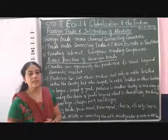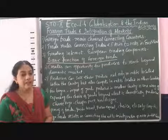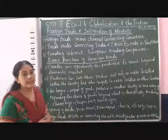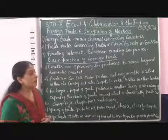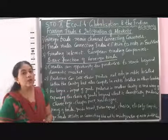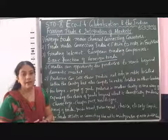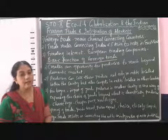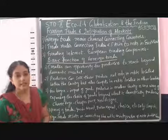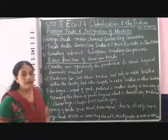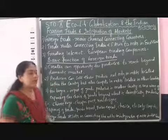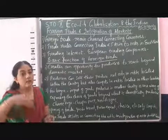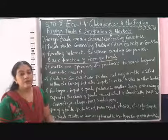There are three to four basic functions of foreign trade. The first and foremost function is that with foreign trade, domestic markets and industries can create an opportunity. It will create an opportunity for producers to reach beyond the domestic market. When a thing is produced and foreign trade occurs, it can be sold not only in their own market but also in the markets of other countries. So producers can compete in markets located in other countries, and their products will compete with the products of other countries.